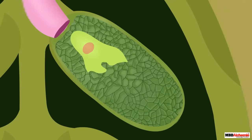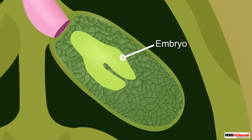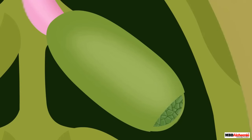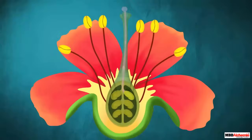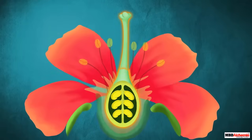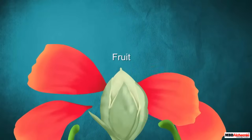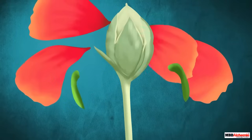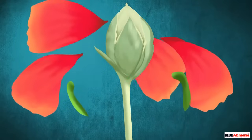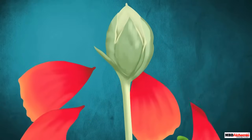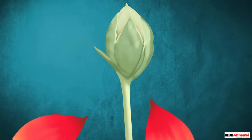The zygote formed after fertilization then divides several times to form an embryo inside the ovule. The ovule develops a tough coat and changes into a seed. The ovary, on the other hand, ripens and forms a fruit around the seed.